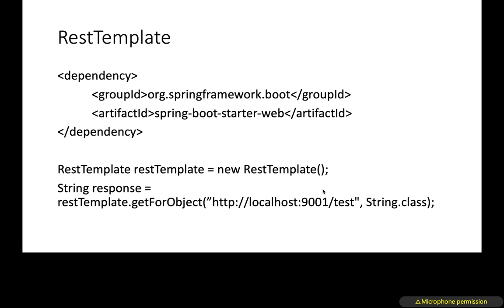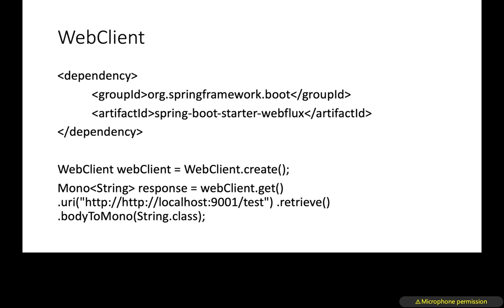For RestTemplate, we just add the Spring Boot starter web dependency, write a RestTemplate bean or object, and get the response by calling getForObject, getForEntity, or any other method. For WebClient, since RestTemplate is going to be deprecated soon, if you want to avoid it, you add the Spring WebFlux dependency — even if you're not writing reactive programming with Mono or Flux — just to make API calls using a WebClient object. The response will be either a Mono or Flux object.